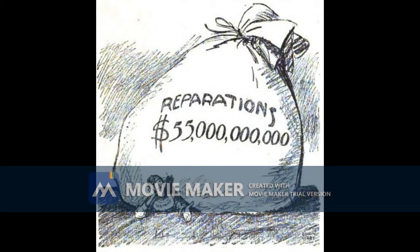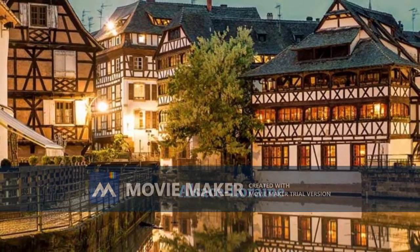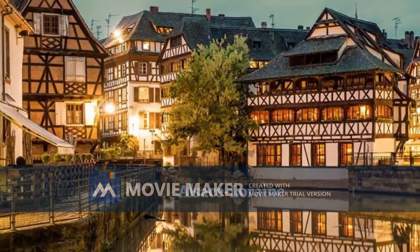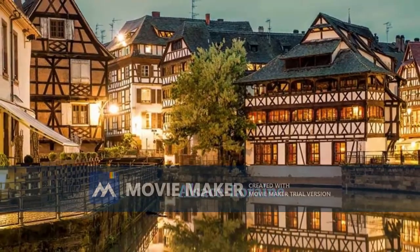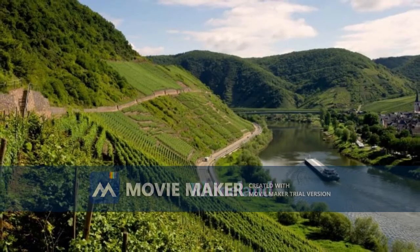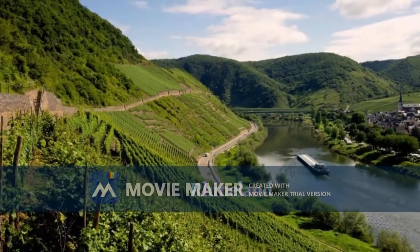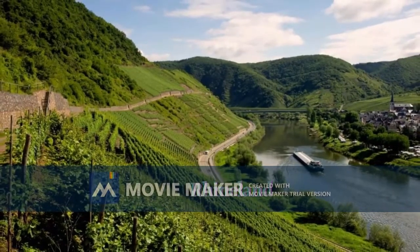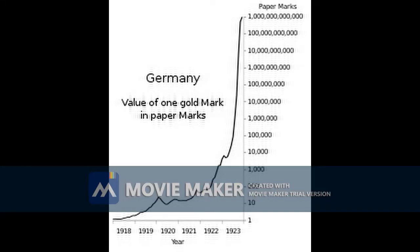Germany was forced to pay reparations amounting to 13 billion dollars in today's value to the Allied powers. Germany was also required to hand over Alsace-Lorraine to France and also Rhineland, which was one of the most prosperous territories of Germany. This was seen as a huge insult and also burdened the German economy, increasing inflation and unemployment in the country.